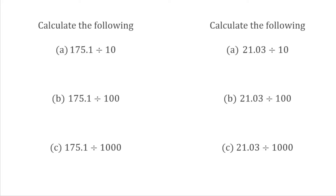For this first lot of questions, we've got 175.1 divided by 10. We're dividing by 10, so we move all the digits one place to the right. The 5 makes it over the decimal point, but nothing else. So our answer is 17.51.